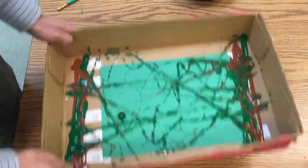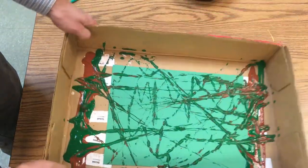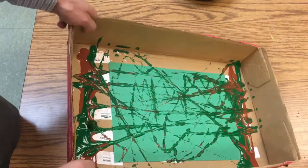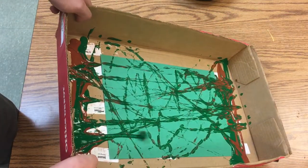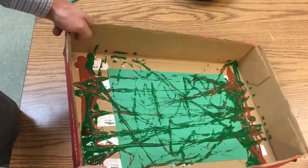Just moving it around in the box. You want to go fairly slow because if it rolls really fast, it's not gonna make much of a mark. We're using green, of course,